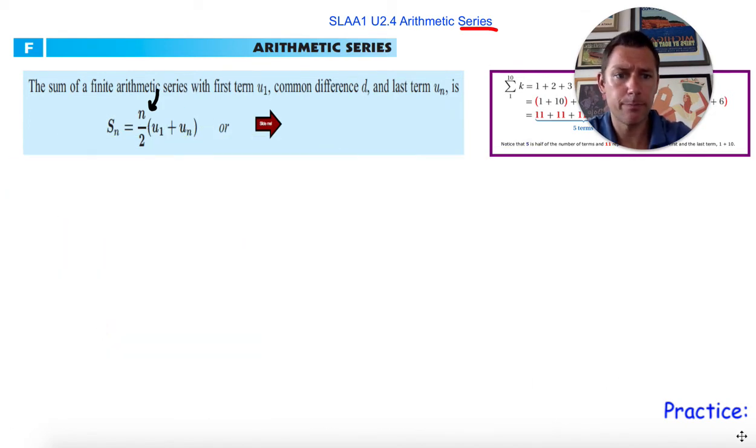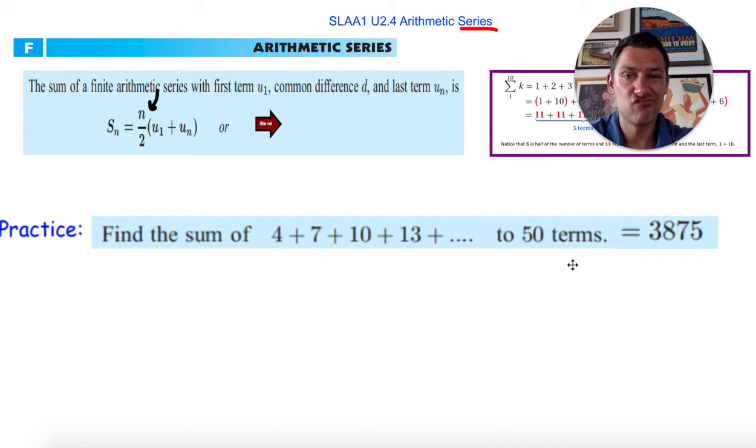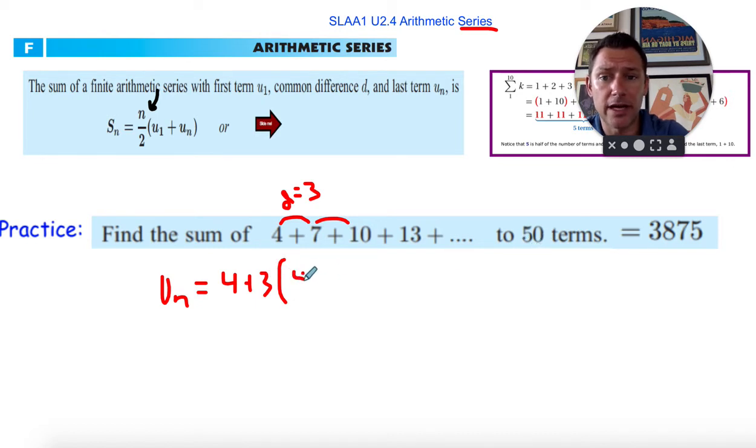All right. You try that with this. Find the sum of that to 50 terms. Oh, it tells you the answer, but we're going to pretend we don't know that. So, I can tell that the jump here, the D value is three. I want to go to the 50th term. Now, one way to do that is to first use UN equals U1 plus three times, let's see, it'd be 50. I want the 50th term. So, 50 minus 1, 49. And you could find UN, whatever it is out here. We could then use that in here.